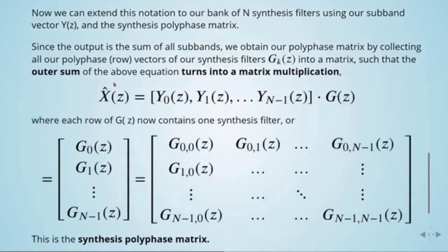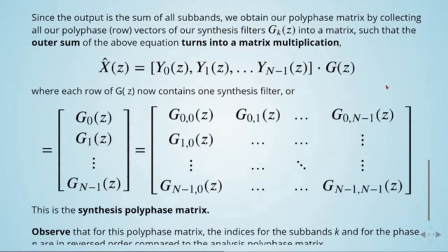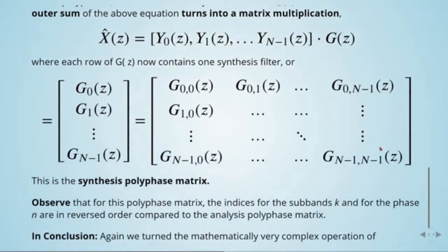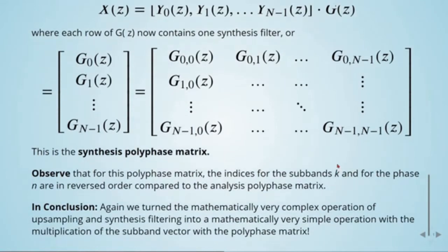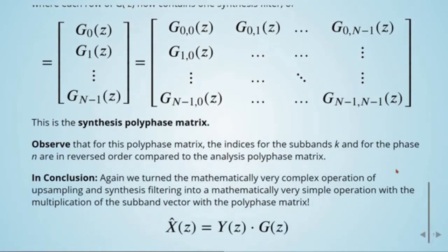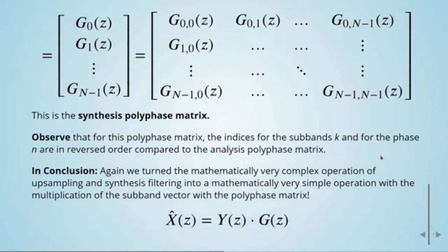Each row of G now contains one synthesis filter, forming the synthesis polyphase matrix. Observe that for this polyphase matrix, the indices for the sub-bands K and for the phase n are in reverse order compared to the analysis polyphase matrix. In conclusion, we have turned the mathematically very complex operation of upsampling and synthesis filtering into a mathematically very simple operation: the multiplication of the sub-band vector with the polyphase matrix, giving us our reconstructed signal.